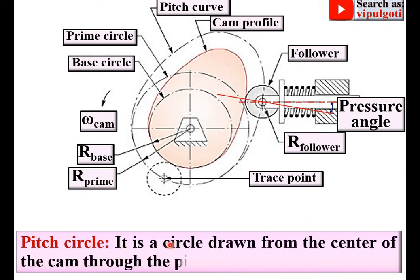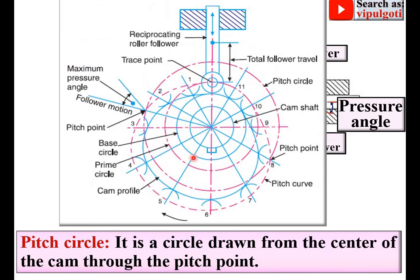Next: pitch circle. It is a circle drawn from the center of the cam through the pitch point. Here you can see the pitch point having the maximum pressure angle, and the circle passing through this point is known as the pitch circle. Keep in mind that the pitch circle always passes through the pitch point.